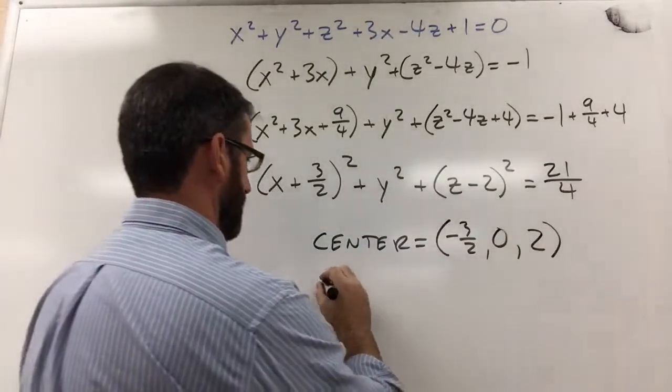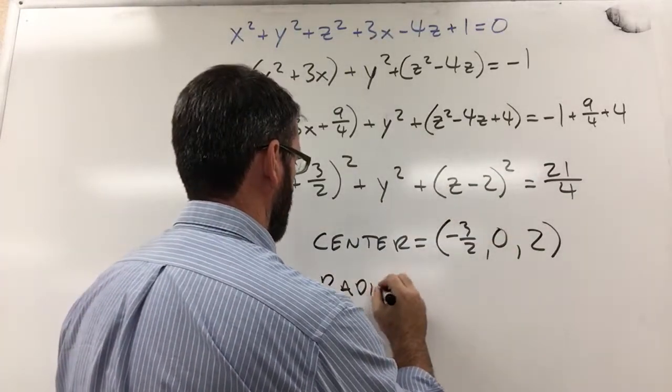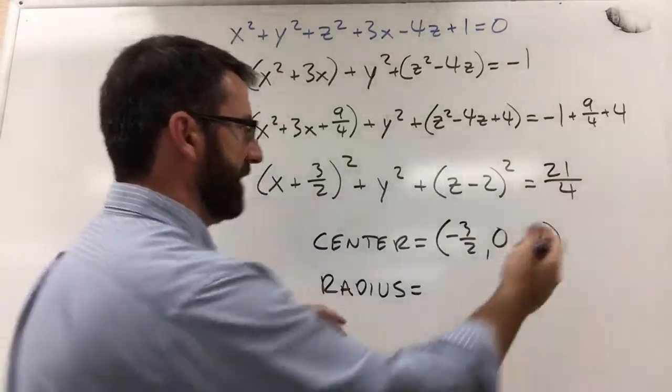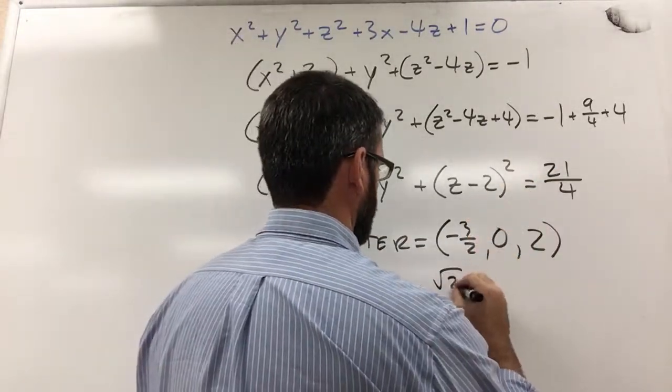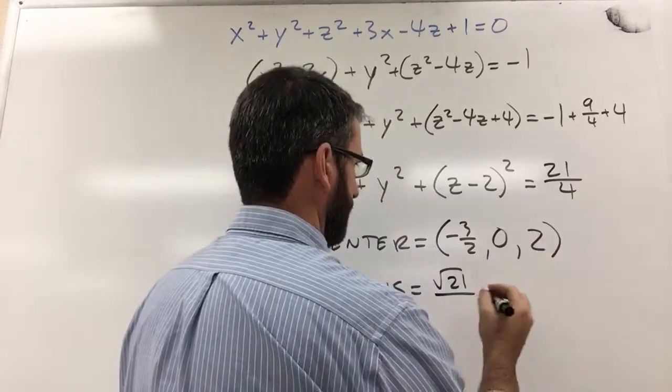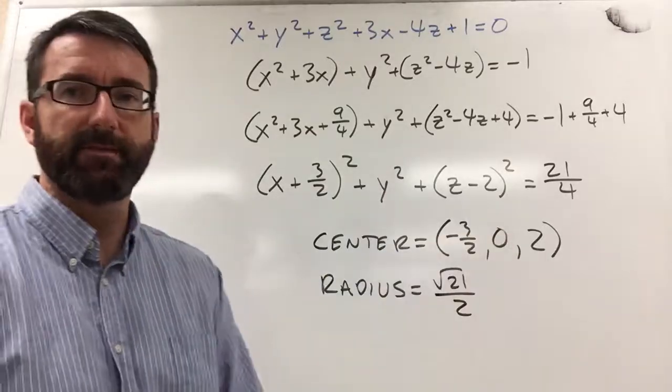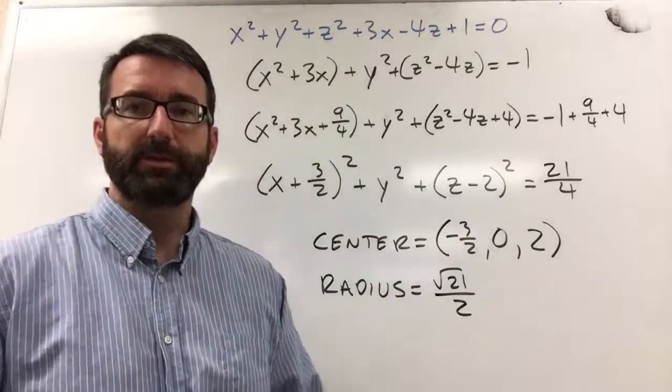And then the radius is going to be the square root of this. So the square root of 21 fourths, square root of 21 over the square root of 4, which is 2. So the radius is square root of 21 over 2. The center is negative 3 halves, 0 and 2.